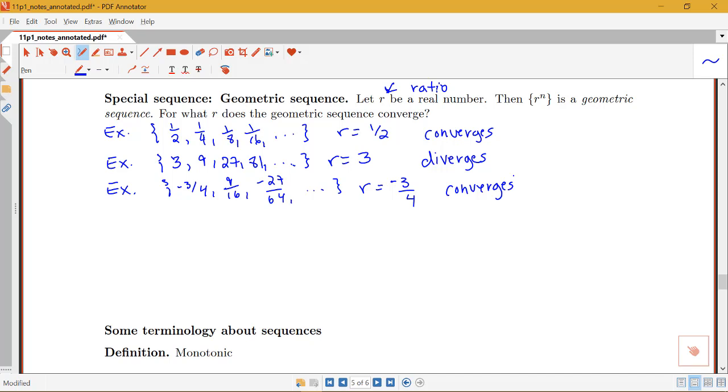We looked at some values here bigger than one, smaller than one, positive and negative values. Let's look at what happens specifically at one and negative one. If r is one, notice that one to the n would just mean all of my terms here are one. So a sequence of all ones will clearly converge; that'll converge to one.